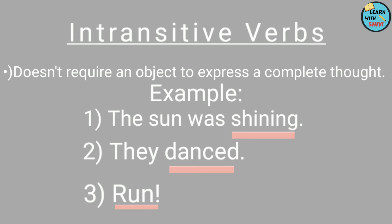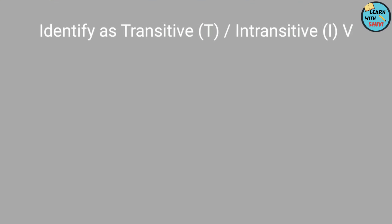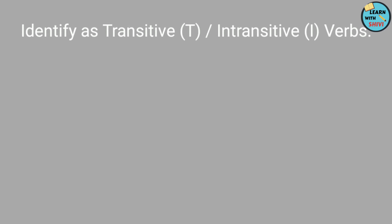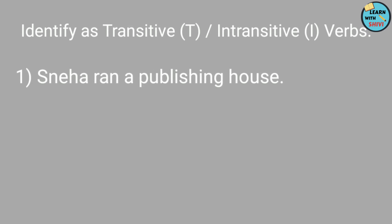Now let's check whether we've understood the concept well through a little exercise. You need to identify the verbs in the following sentences as intransitive or transitive verbs. First sentence: 'Sneha ran a publishing house.' What sort of verb does it have? It's a transitive verb. How did we recognize it? By recognizing whether the verb needs an object or not. We conclude that it does need an object, so 'ran' over here is declared a transitive verb.